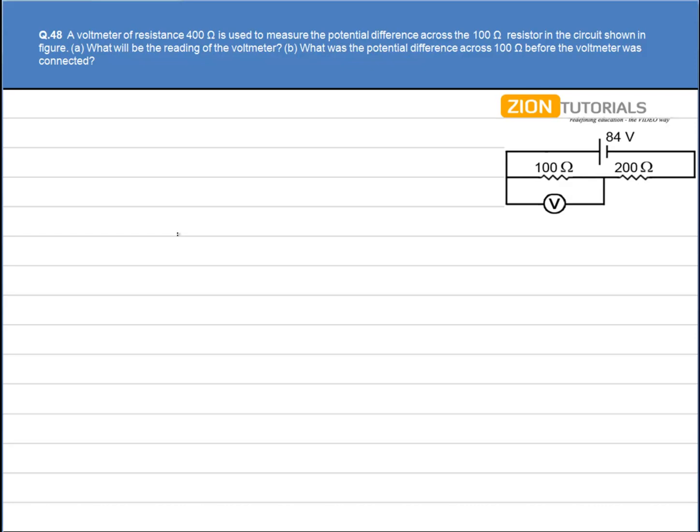In this question, we have a circuit as shown in the figure. A voltmeter has a resistance of 400 ohm, that is RV equals 400 ohm. We have to calculate the potential difference across the 100 ohm resistor.